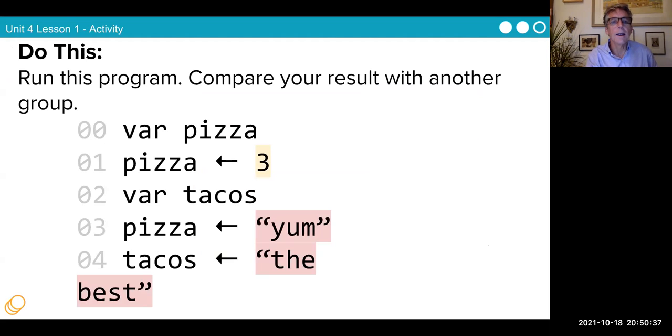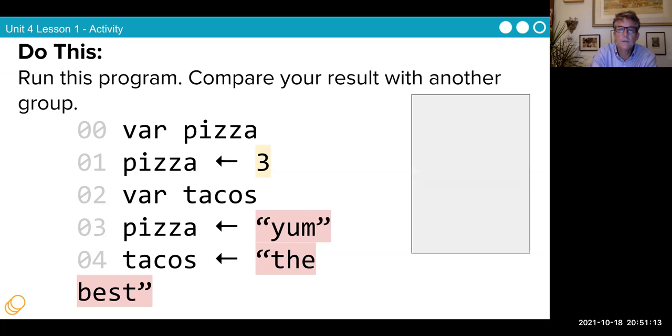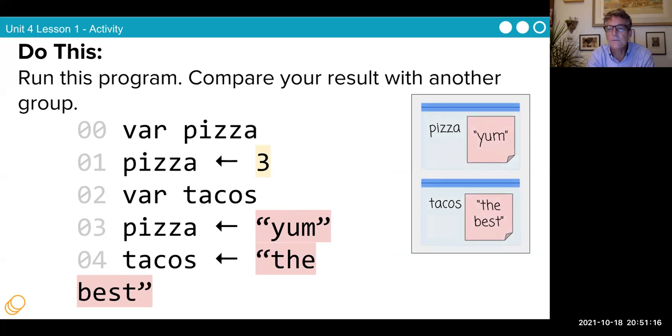We're going to do this without me guiding you through it. So run this program, compare your results with another group. Create a variable 'pizza'. Pizza gets three. VAR, create a variable 'tacos'. VAR tacos. Pizza gets 'yum', the string Y-U-M. Tacos gets 'the best'. What do you end up with? Let's take a look. Here we are. Pizza is 'yum' and tacos are 'the best'. That is what you end up.